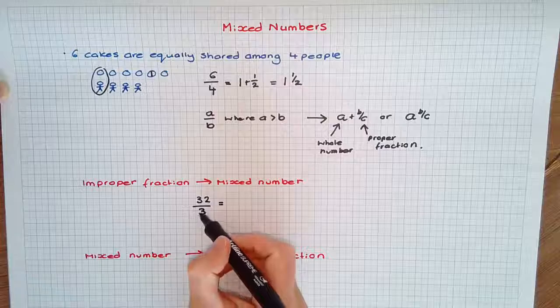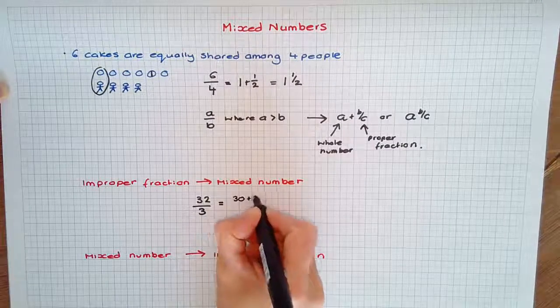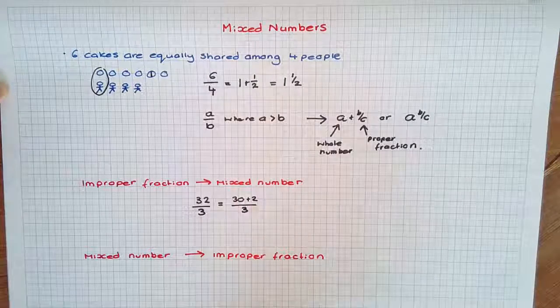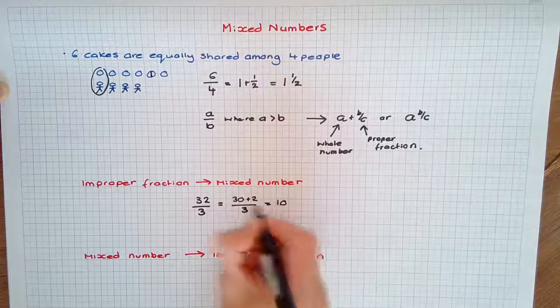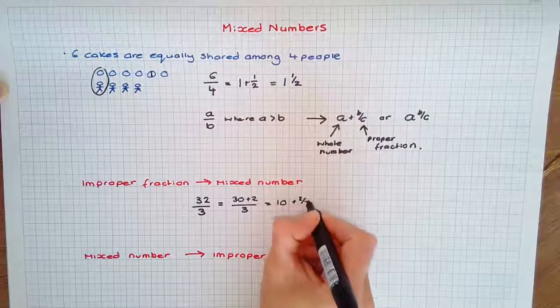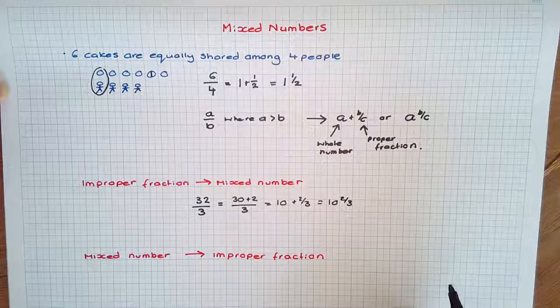When you're thinking about multiples of three, the closest to 32 is 30 with two remainder, and it's still over 3. So 30 divided by 3 is 10, plus the 2/3, finally written as 10⅔ as a mixed number.